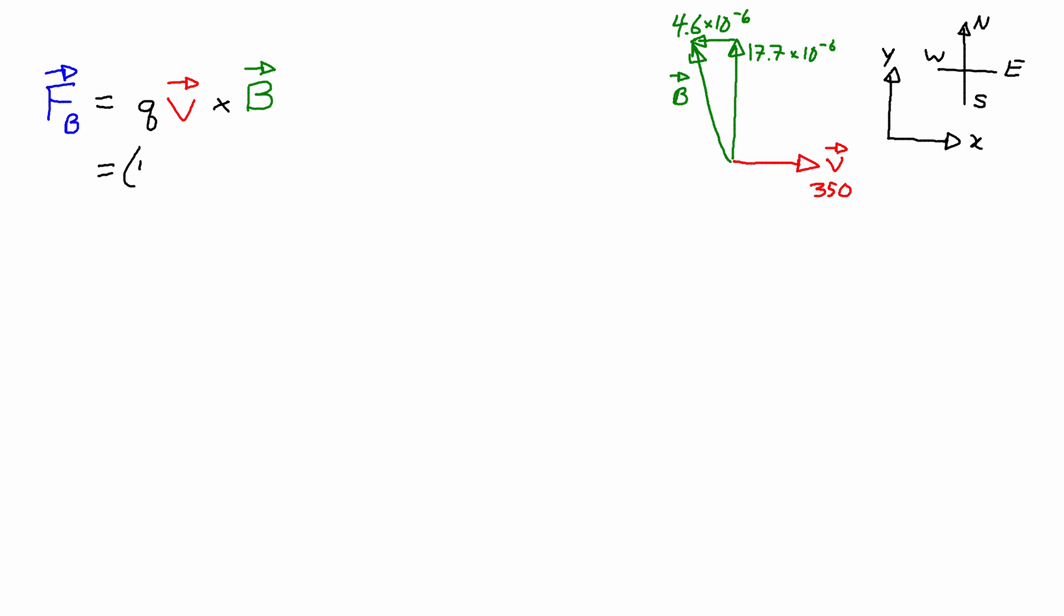So for the charge, we had a 50 microcoulomb charge, so that's 50 times 10 to the negative 6 coulombs. Then we need to actually evaluate v cross B, so I'm going to write these in. The velocity is 350 meters per second i-hat. The magnetic field is actually negative 4.6 times 10 to the negative 6 i-hat plus 17.7 times 10 to the negative 6 j-hat.